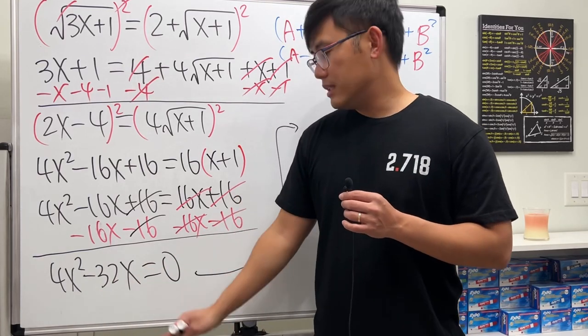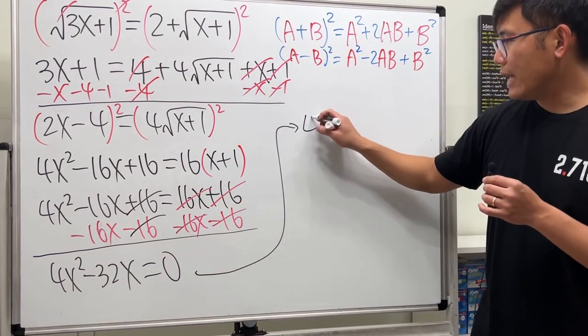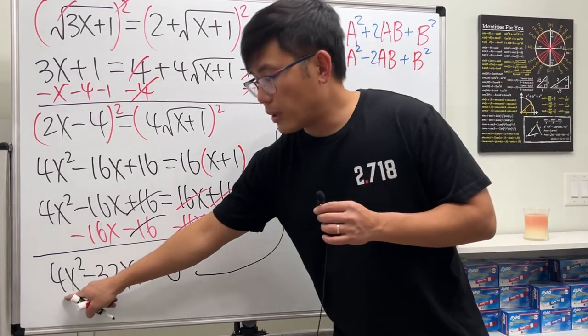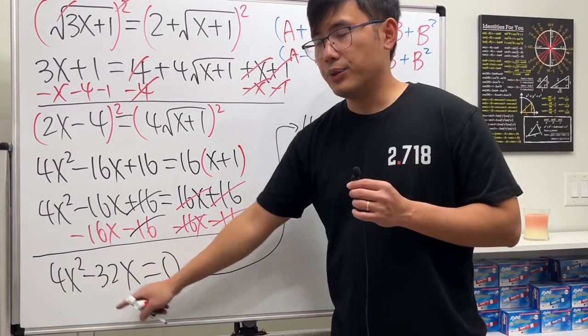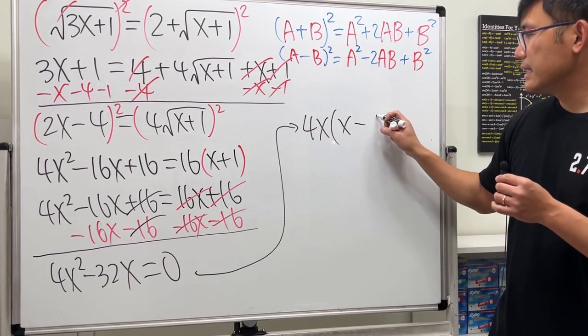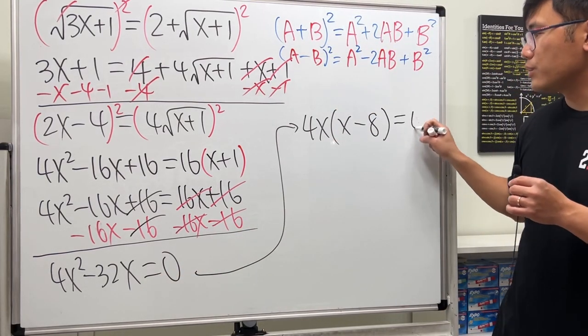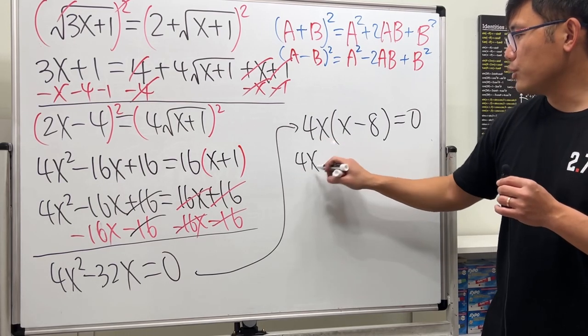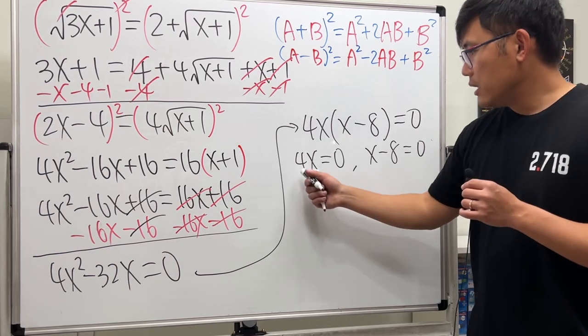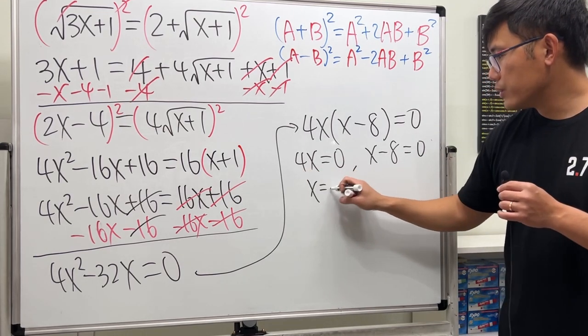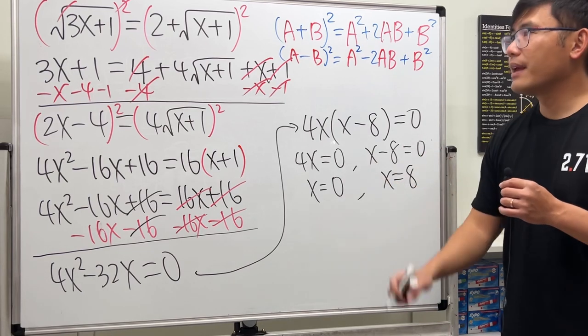Here, we only have two terms, and this is equal to 0. Let's factor out the 4x. So we will have 4x. And this right here will give us an x. Minus 32 divided by 4 is 8. And the x is out already. So this is what we have, and that's equal to 0. And then, right here, 4x, you put it equal to 0. And then you put x minus 8 equal to 0. Divide both sides by 4, x is equal to 0. And then add 8 on both sides, x is equal to 8.